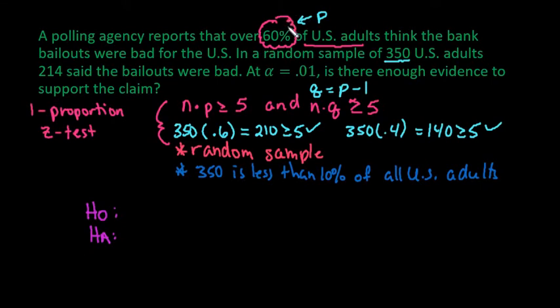Remember that p is what we use for our population parameter for this one. Some texts use p0 instead of p, or pi instead of p, but we're just going to use p for this one. We're saying that over 60%, so since it's over 60%, our claim is about the alternative. So we're saying that p is greater than 0.60. The opposite of that is that p is less than or equal to 0.60.